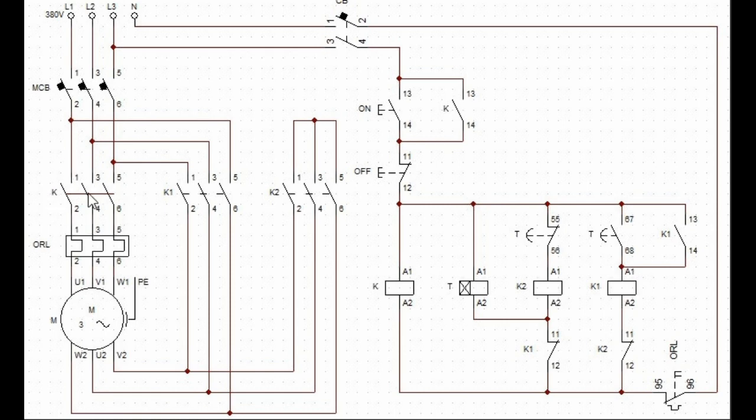From the output of contactor K, three phases are connected on the overload relay and then supplied to the motor terminals. L1 is connected to U1, L2 is connected to V1, and L3 is connected to W1.